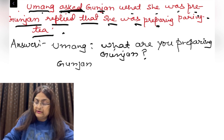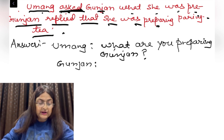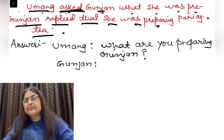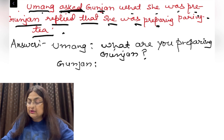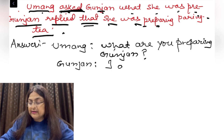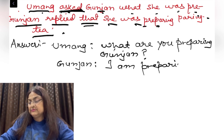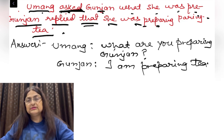Gunjan replied — what did she say? She said: 'I am preparing tea.' She was preparing tea becomes I am preparing tea. So Gunjan said: 'I am preparing tea.'